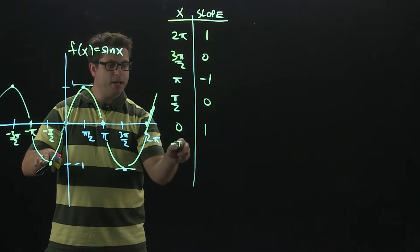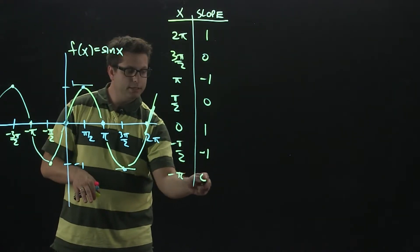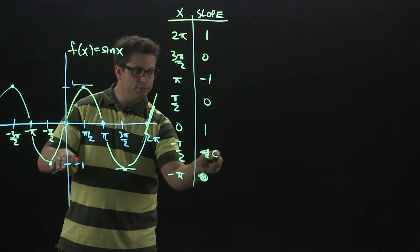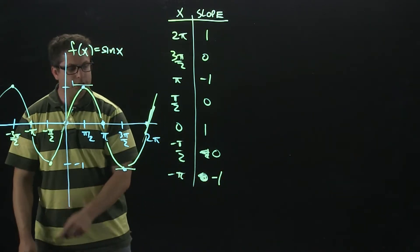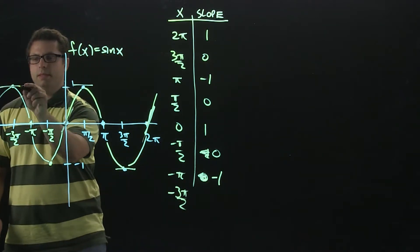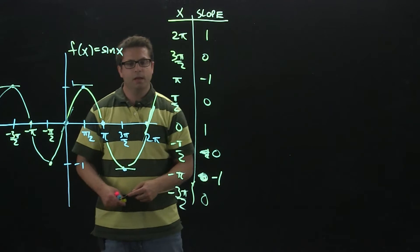Then at negative pi over 2, you will get... oops, sorry, negative pi over 2 is 0. My mistake. Negative pi is negative 1. All right, so I'll do one more. Negative 3 pi over 2, right here, slope is 0. All right, so then when we create the graph of the derivative...